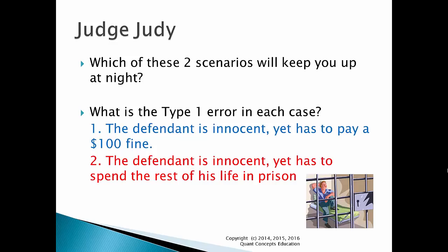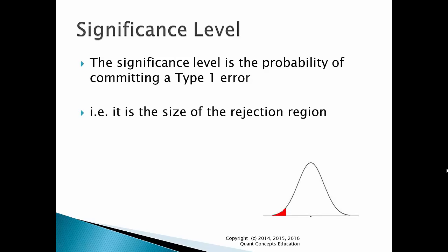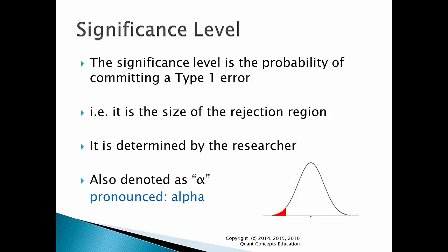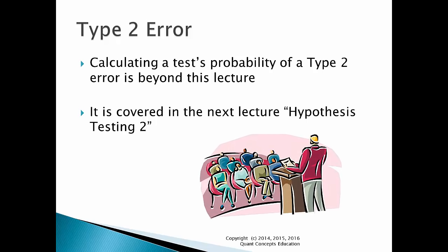The significance level is simply the probability of committing a type 1 error — that is, it is the size of the rejection region. The researcher determines the probability of a type 1 error they are comfortable with, so it's the researcher that sets the significance level of a test. It's denoted by alpha, and will usually be given to you in the question as an input. Calculating the probability of a type 2 error is beyond the scope of today's lecture — it will be covered in the next lecture on hypothesis testing.